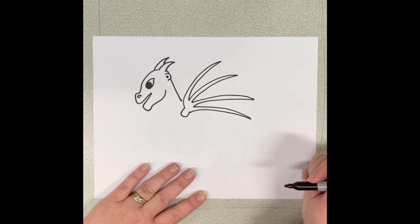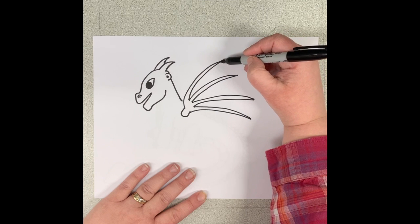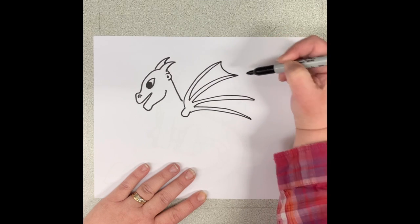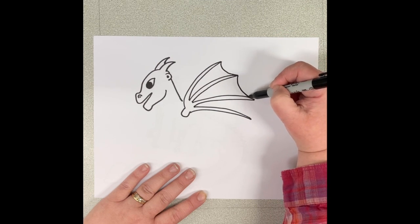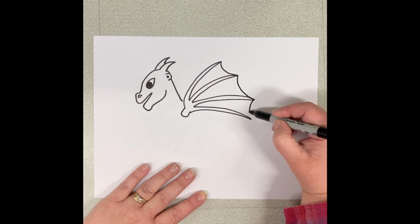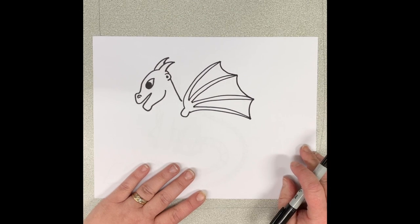And then we're going to attach the wings. And then we make kind of a U shape going in between each long bone. So it kind of looks like a bat's wing as well.